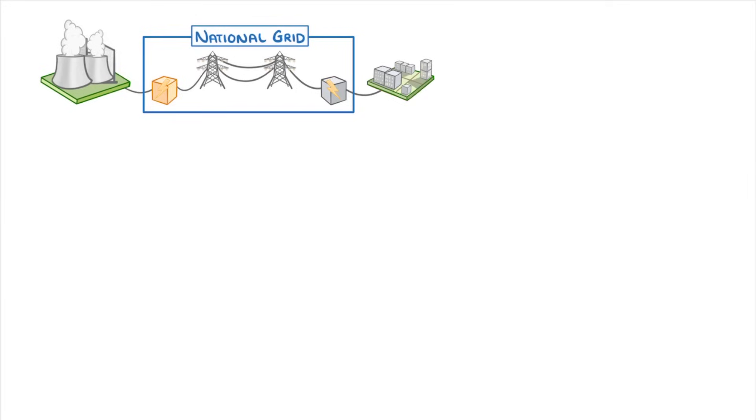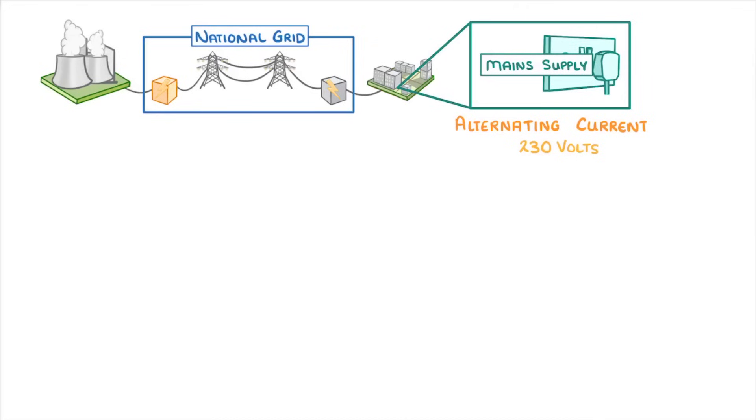Here in the UK the large majority of our electricity comes from the national grid which distributes power across the country to our homes. We call the electricity that the supply's mains supply and the two things to know about it are that it's an alternating current of 230 volts and it's at 50 Hertz.